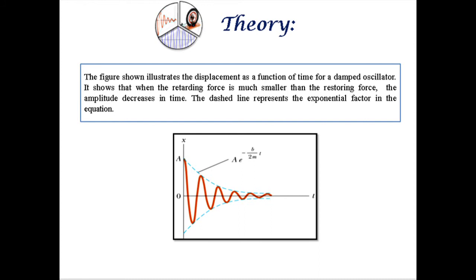The figure illustrates displacement as a function of time for a damped oscillator. It shows that when the retarding force is much smaller than the restoring force, the amplitude decreases over time. The dashed line represents the exponential factor in the equation.